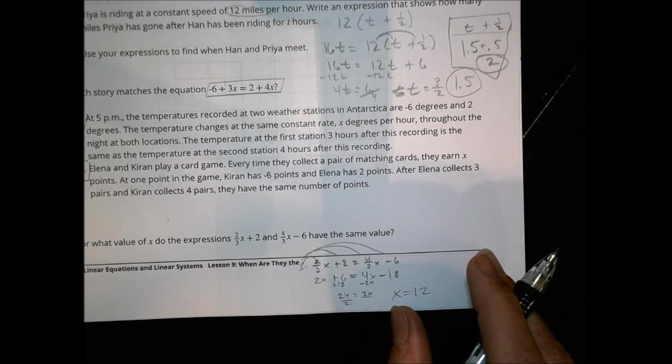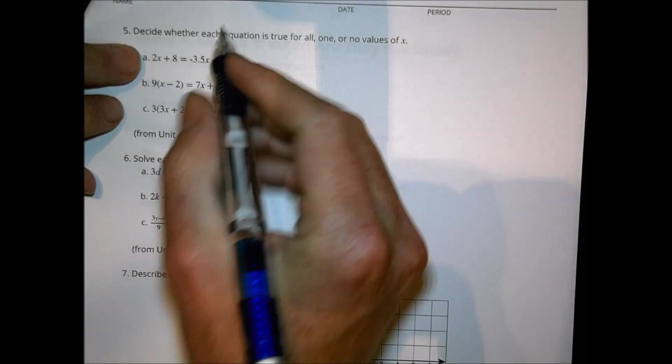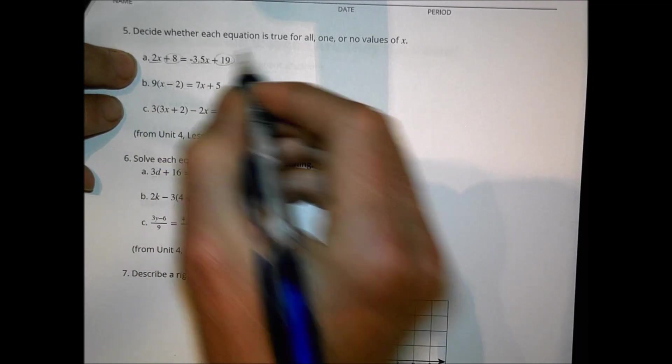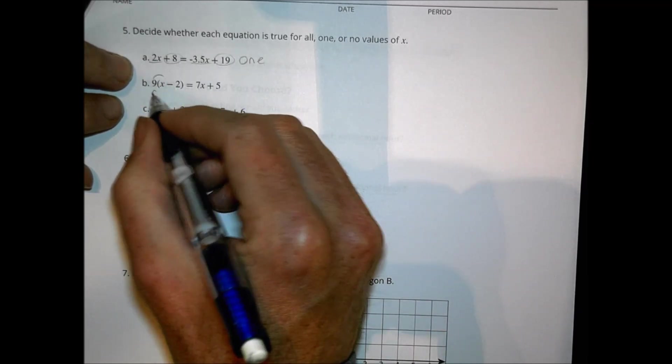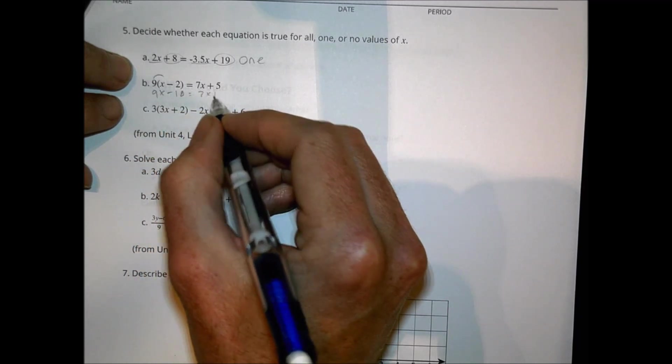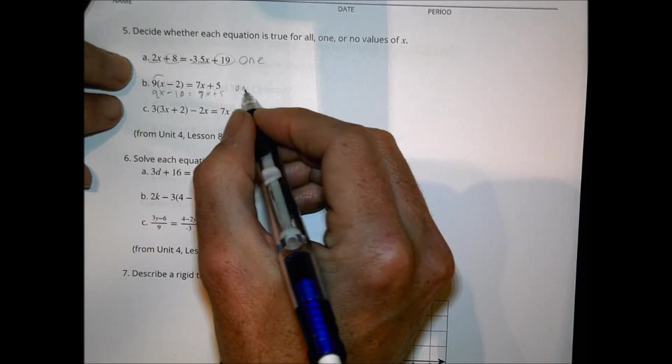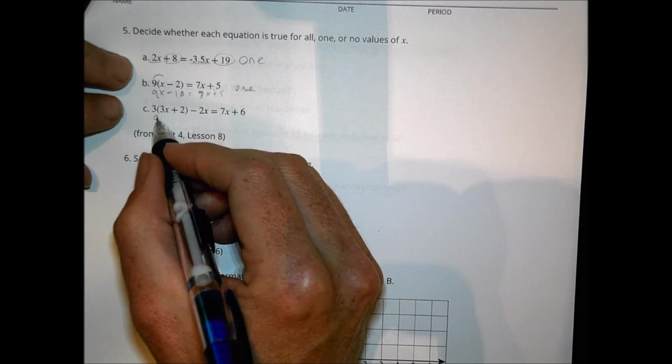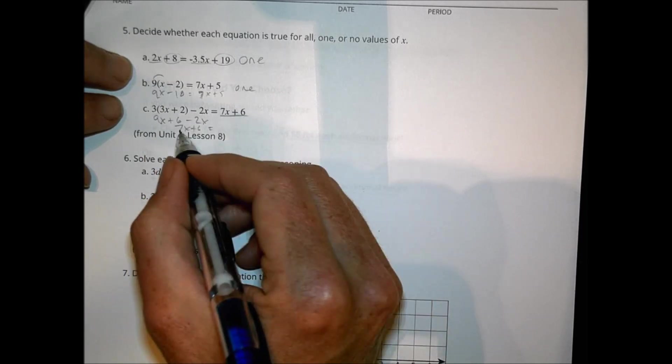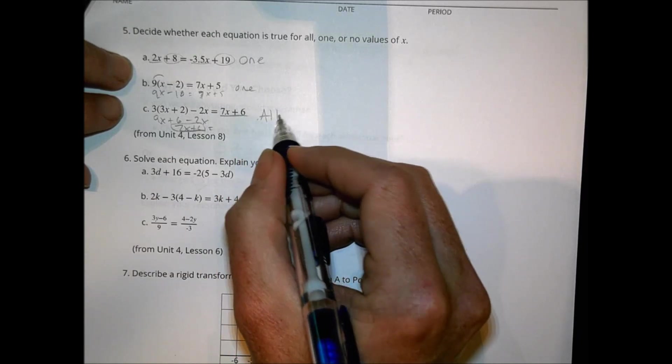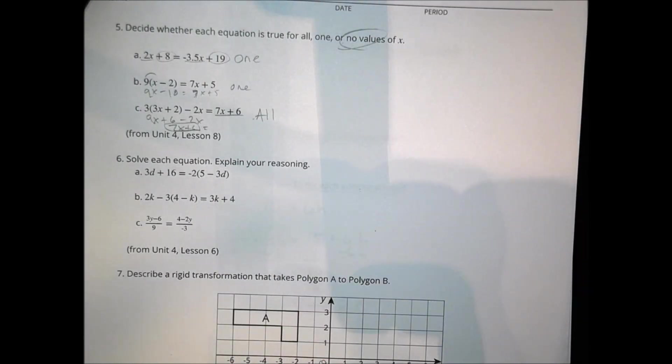Let's turn over the back side. Decide whether each equation is true for all one or no values of x. In this case here we have various values of x there and whole numbers there. We would say there's going to be one solution based upon what we can see how the way the equation is set up. The structure there. Here we have 9x minus 18 equals 7x plus 15. Again. Different values of x. Different whole numbers. We're going to end up with one solution there. For this one we have 9x plus 6 minus 2x. The 9x and the 2x are going to combine to make a 7x plus 6 which equals what we have there. So because those are equal we're going to have all values there are going to work. So we actually don't have any there or no value in this problem.